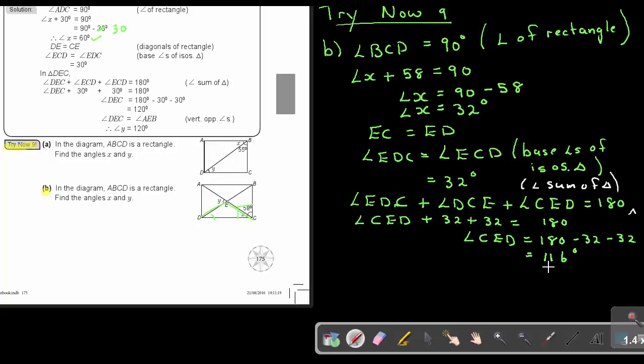So this will be now, let's just write it in red, 116 degrees. But can you see that this is a straight line? So I'm going to now continue. I'm just going to make it another color now. So angle AED, so AED, this angle, is equal, is going to be, so this angle plus the 116.